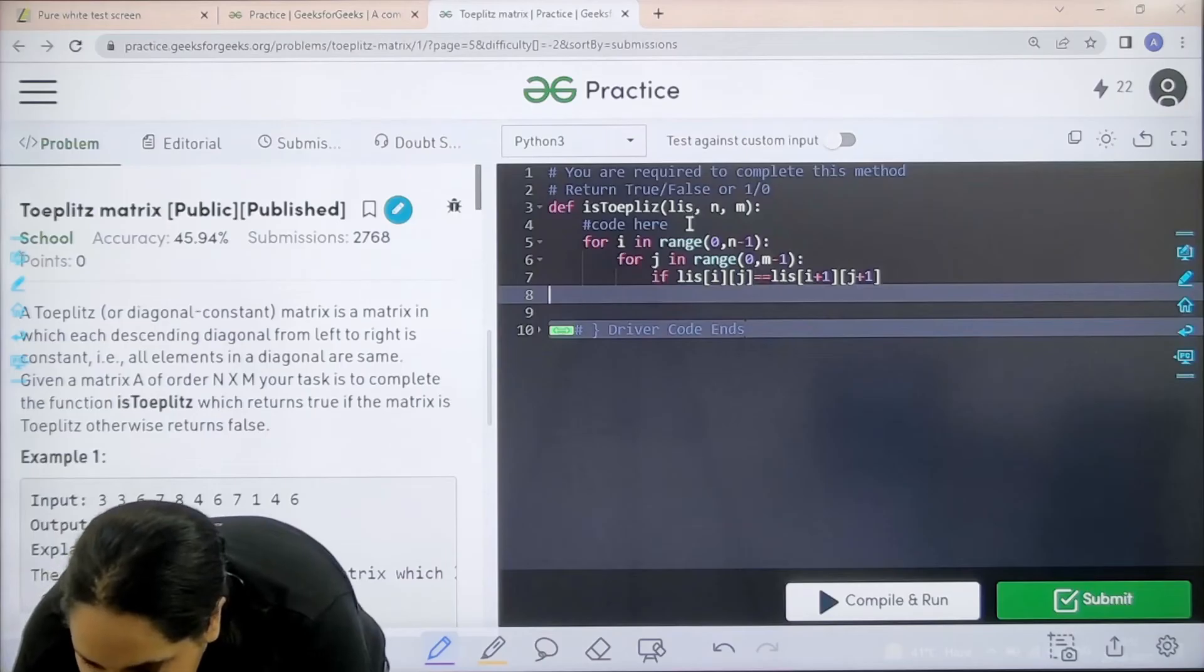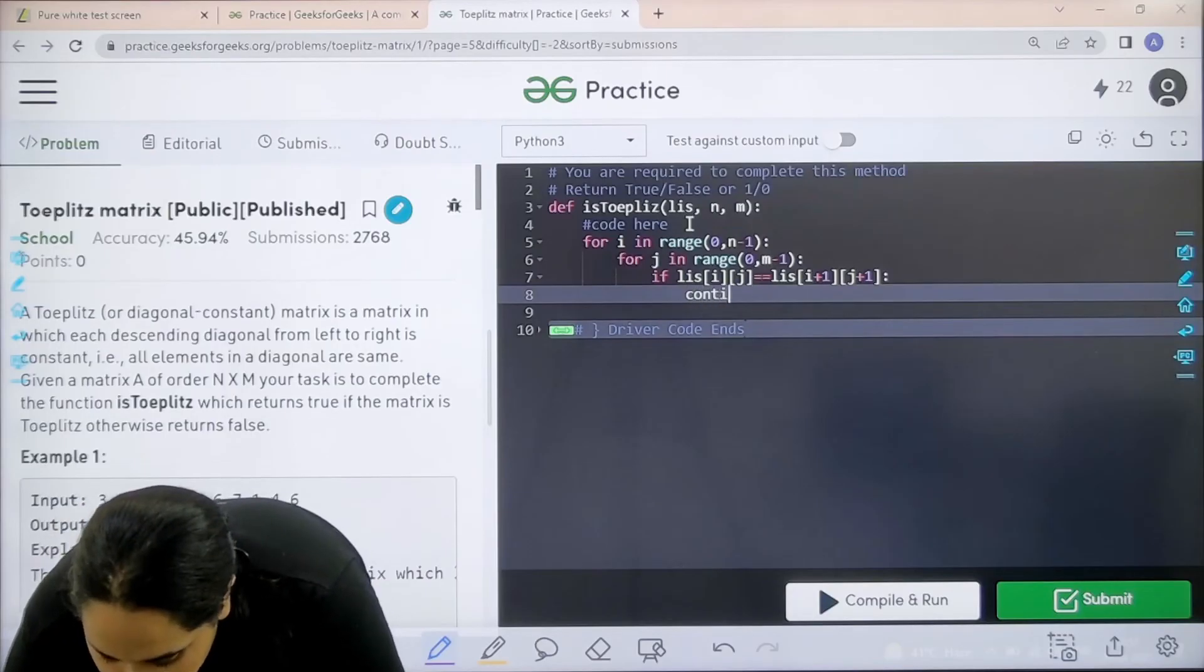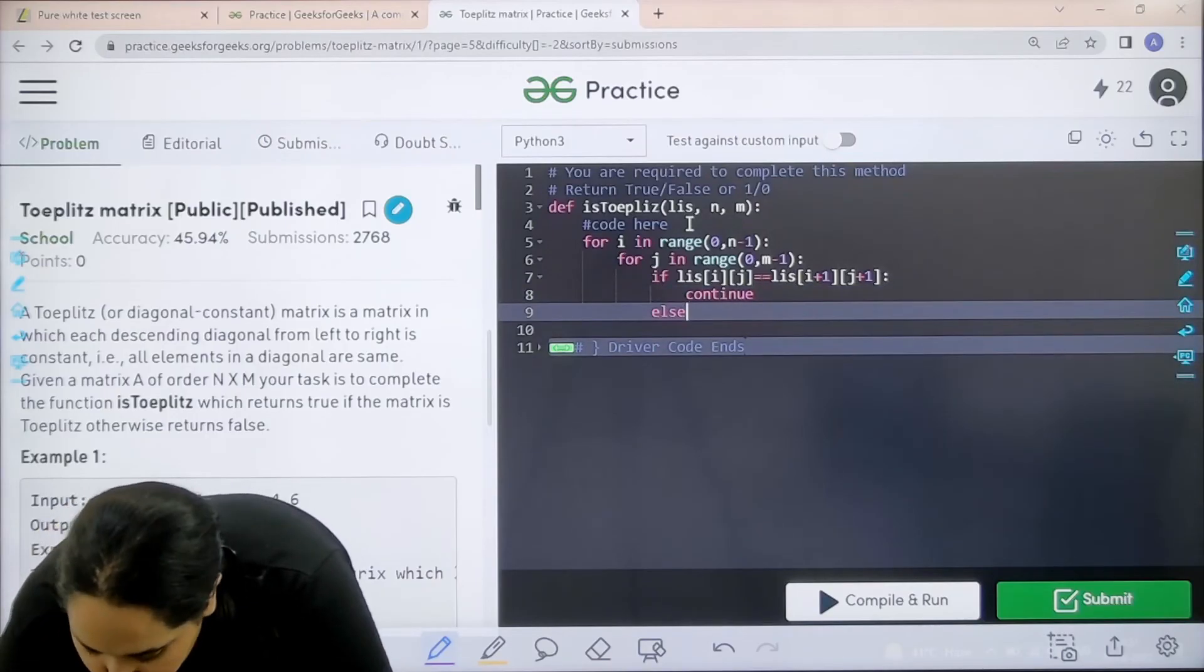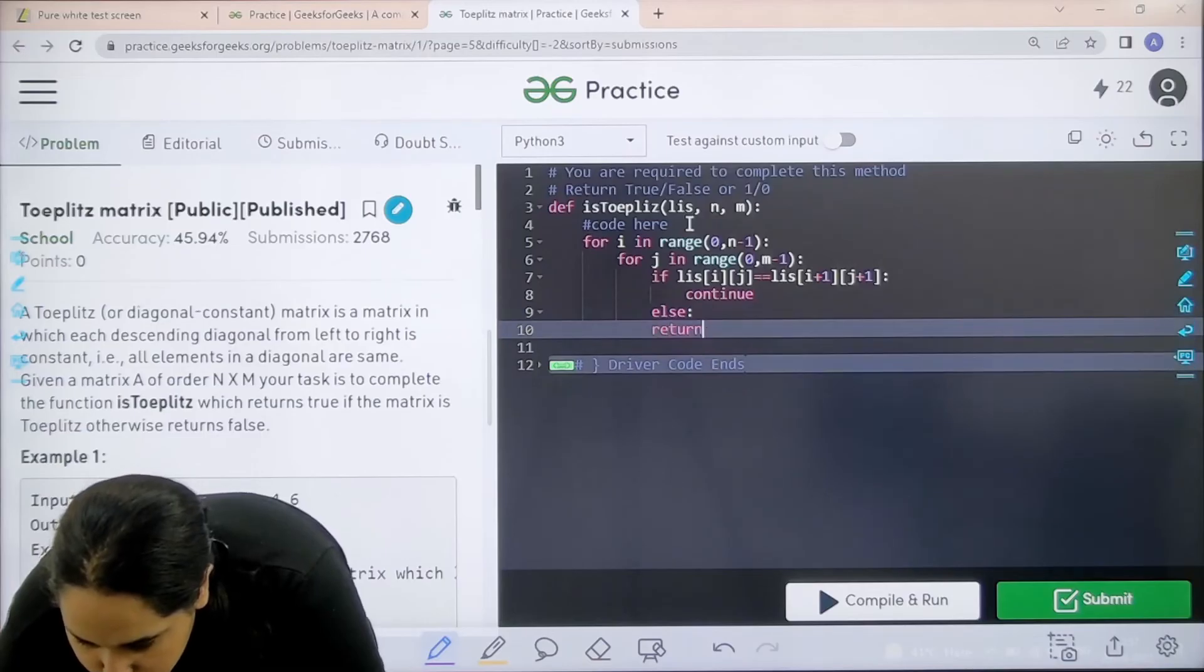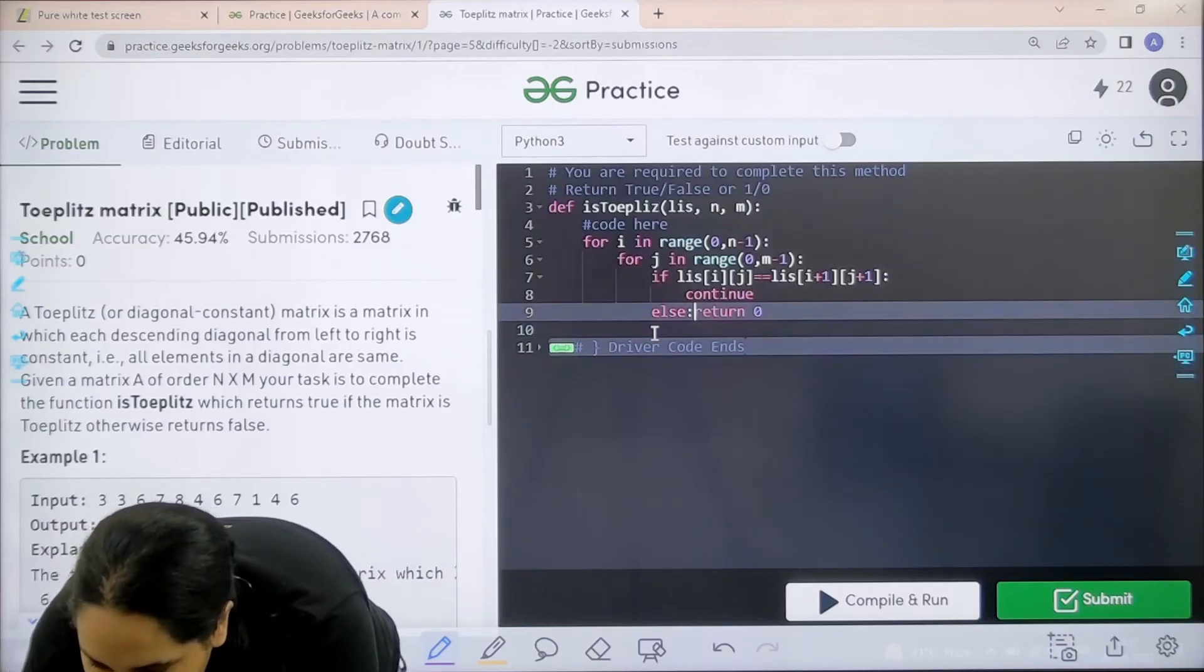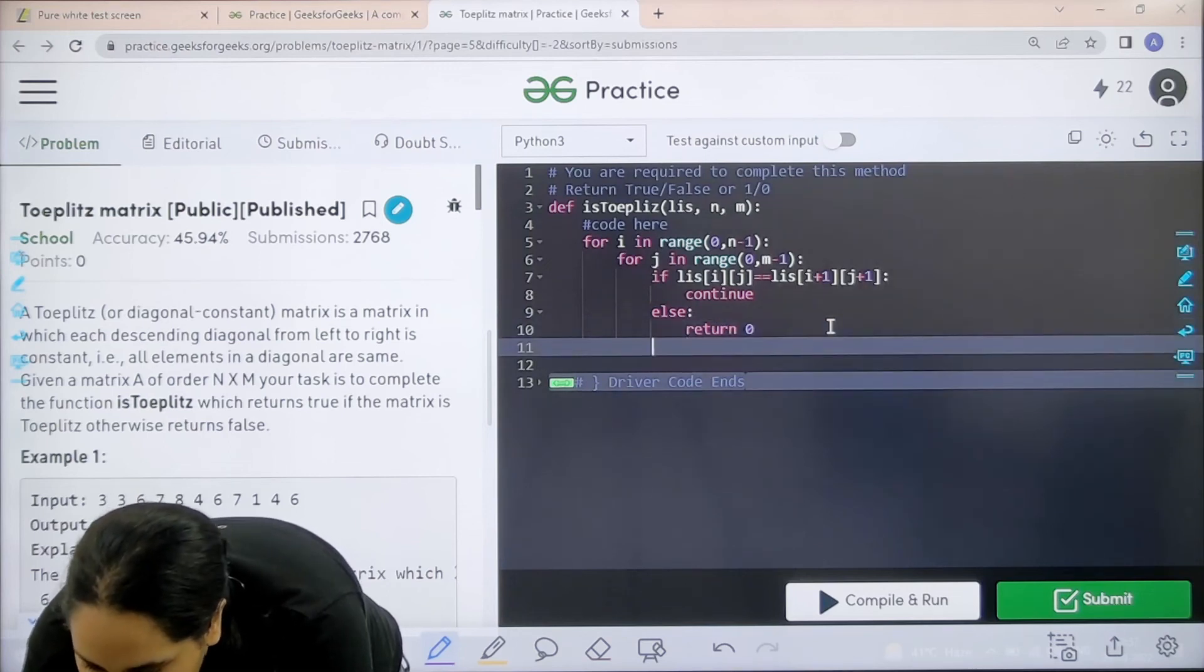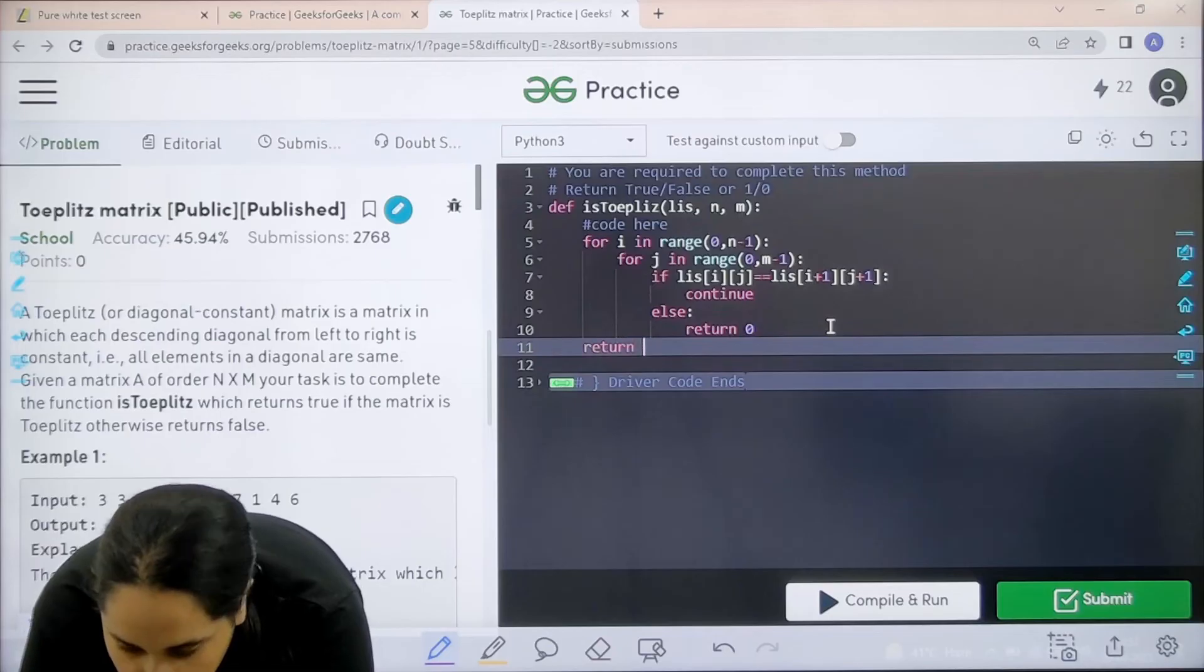If this is true then what? Then I need to return with true. So I need to say continue because I need to check for the entire matrix. Else if this is not true then I can just directly return with 0. There is not proper spacing over here. Now if this is true, if I check for all the diagonals in the matrix left to right then I would return with the value 1.